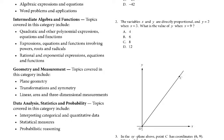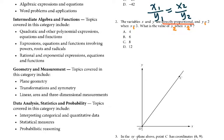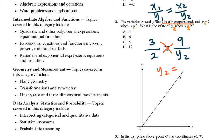For number 2, variables x and y are in direct proportion, and y equals 2 when x equals 3. What is the value of y when x equals 9? For direct proportion, we know x1 over y1 equals x2 over y2. So with y1 equals 2 and x1 equals 3, and x2 equals 9, we plug in: 3 over 2 equals 9 over y2. Cross-multiplying gives y2 equals 18 over 3, which equals 6.